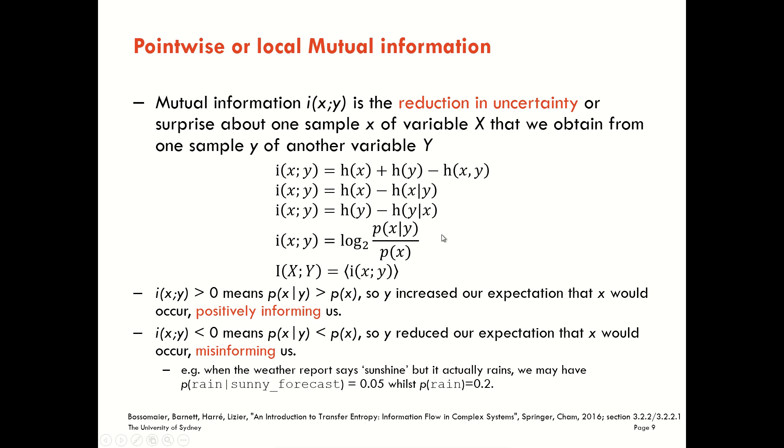If we plug these sample numbers in, we're going to get a ratio of those probabilities. It's less than one and therefore a log value for that pointwise mutual information that's negative. So here we were misinformed by the weather report about whether it would actually rain.